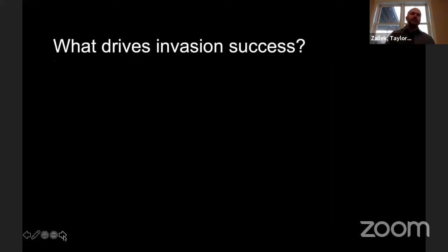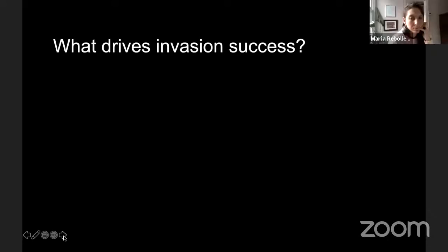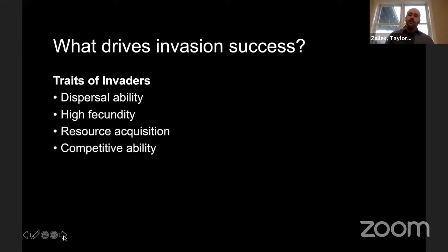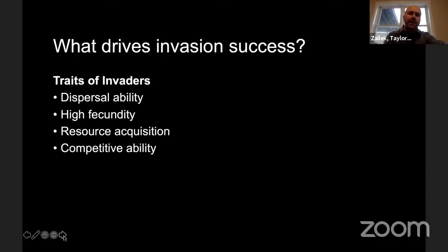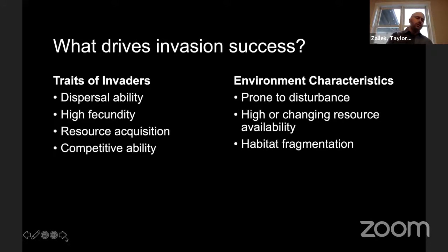Invasion success — what drives it — is a question that has fascinated researchers for generations. There are many theories and hypotheses: some revolve around traits of invasive species and their populations, such as dispersal ability, high fecundity, and growth rates. Others suggest it could be about the environment — environments prone to disturbance, higher changing resource availability, and shifts in competition dynamics. What I'm really interested in is merging the two together — how do evolutionary components interact with the environment to promote or hinder invasion success? There's good theory to suggest evolution could be significant during invasion, and good empirical evidence particularly from microorganism studies, but what's missing is applying this work to a more macro, diverse community that reflects nature more realistically.